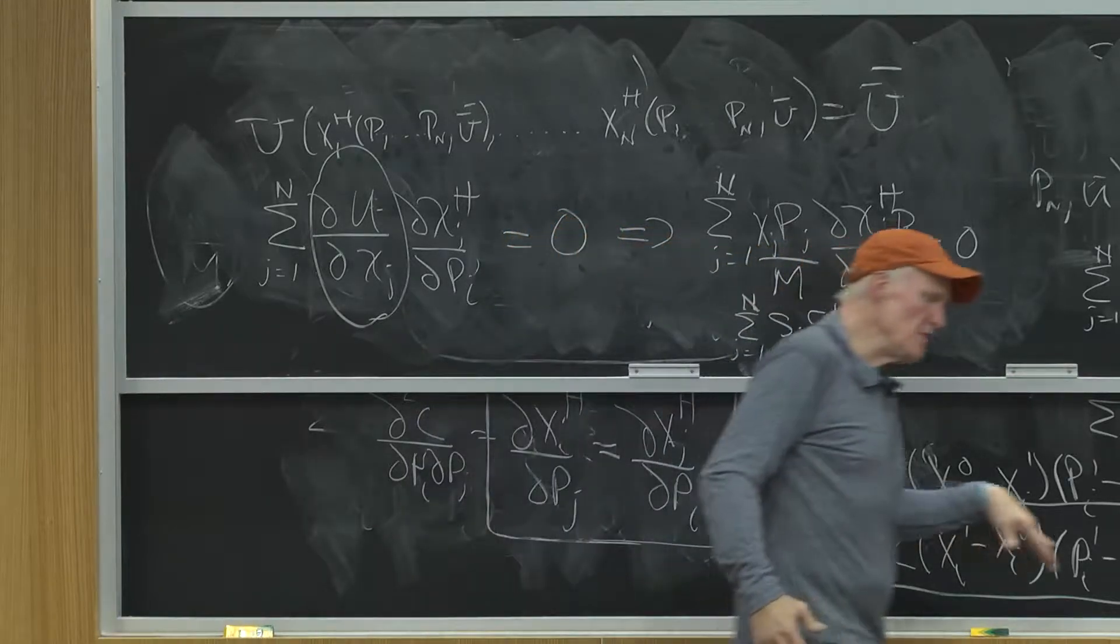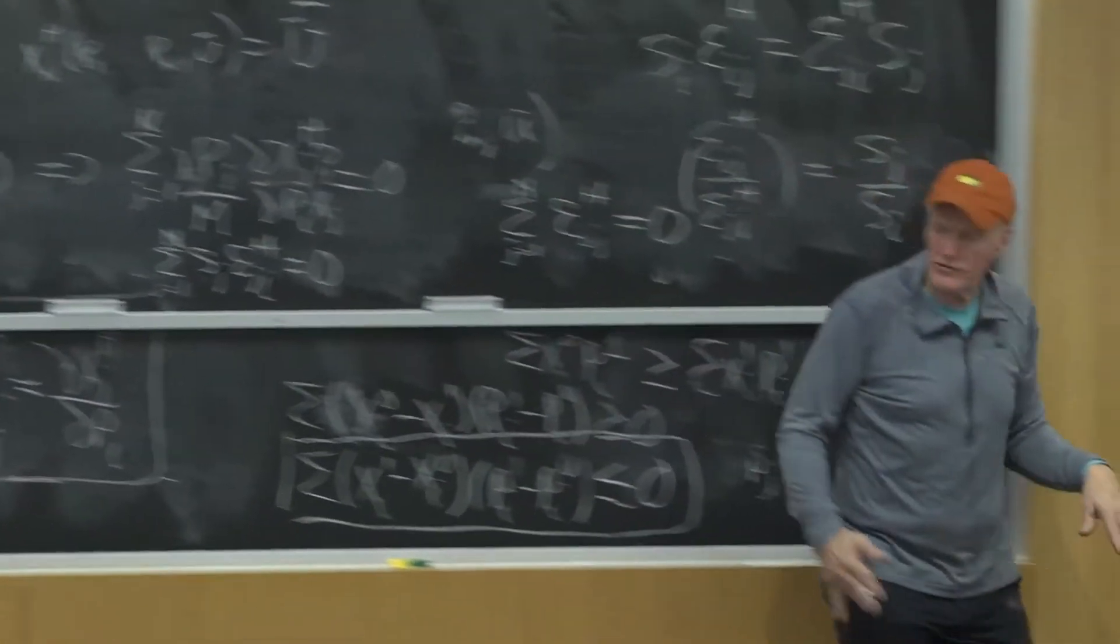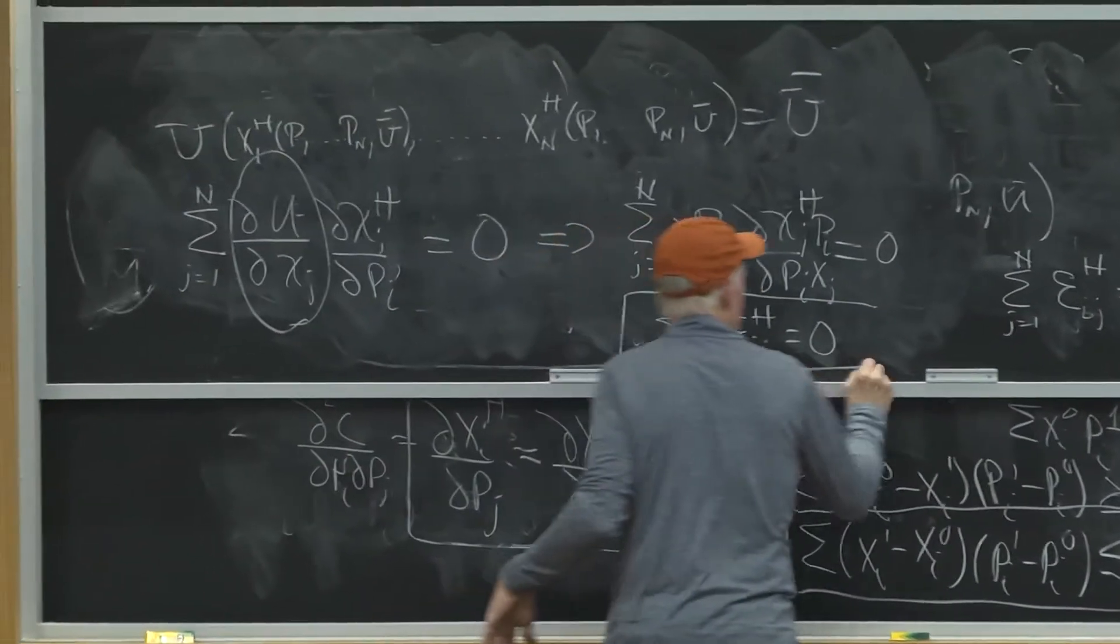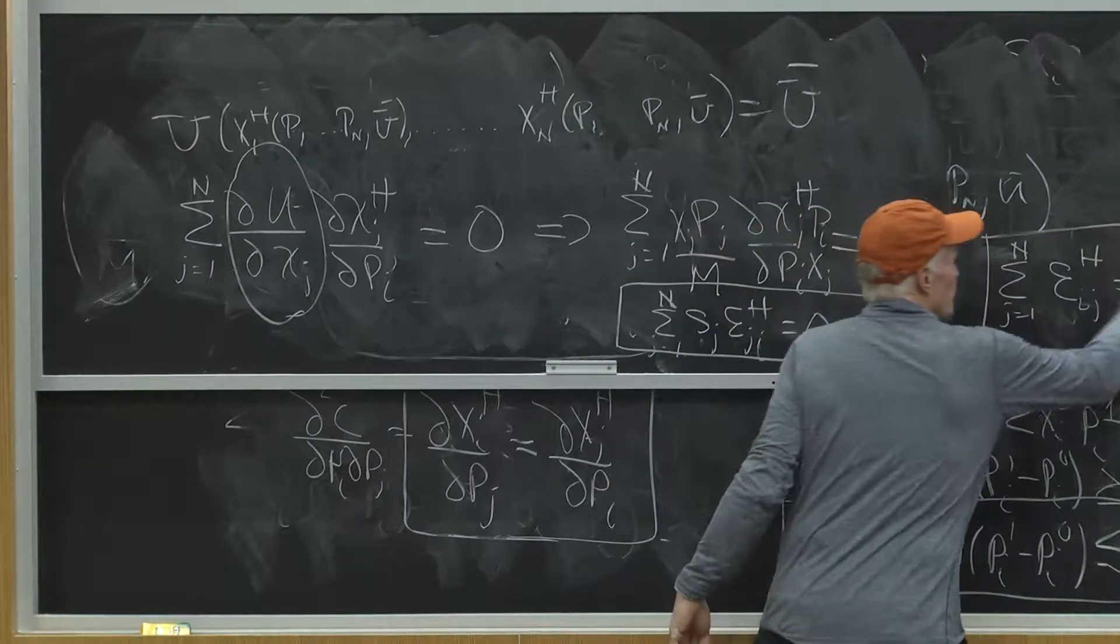Adding up tells me weighted by their shares - that's the difference. Here's adding up, here's homogeneity.